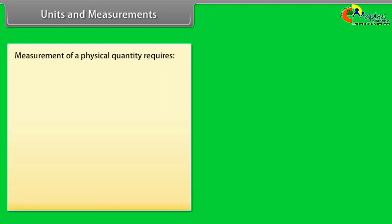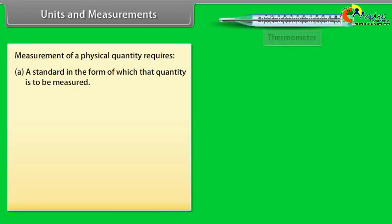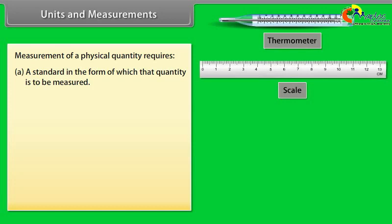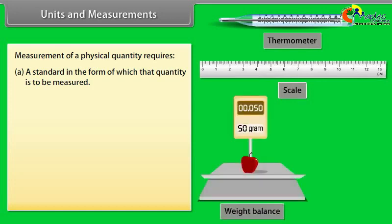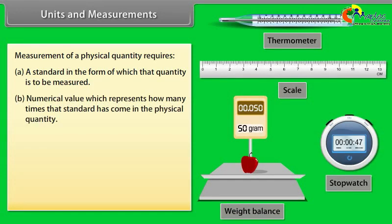Units and measurements. Measurement plays a very vital role in the study of physics. Measurement of a physical quantity requires: A) a standard in the form of which the quantity is to be measured, and B) numerical value which represents how many times that standard has come in the physical quantity.